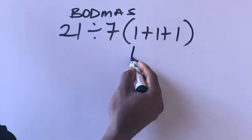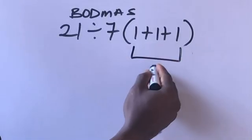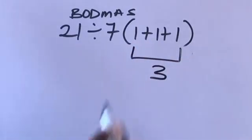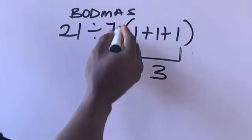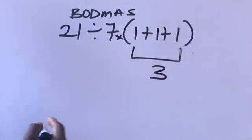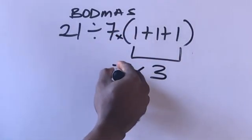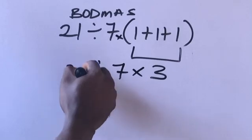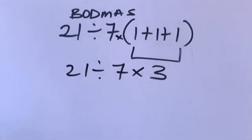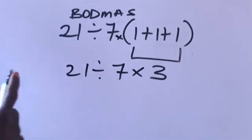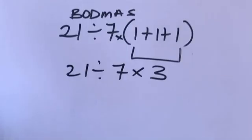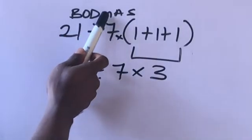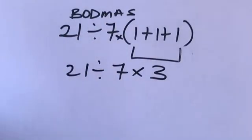Everything here will give us 3: 1 plus 1 is 2, 2 plus 1 is 3. Remember there's an invisible multiplication here, times 7, divide by 21. Now in our order of operations, remember that division comes before this multiplication, so we have to...